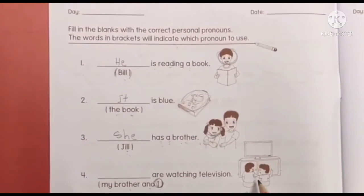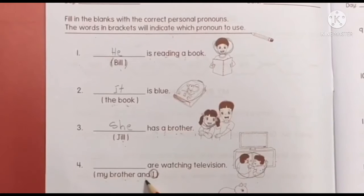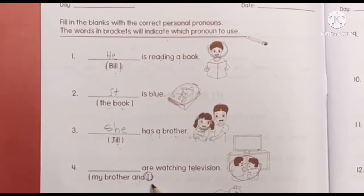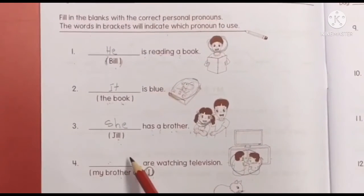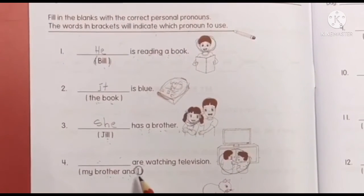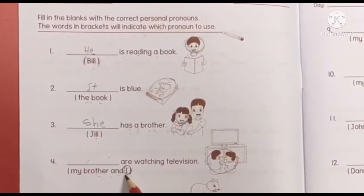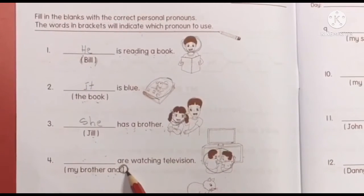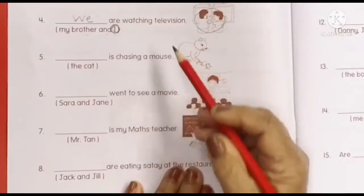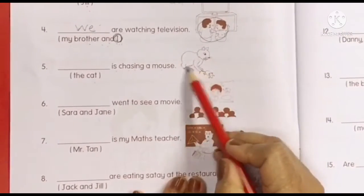The next one — my brother and I. My brother and I are watching television. So, my brother and I — is it 'we' or 'they'? 'We.' And why do we use 'we' and not 'they'? Because of the 'I.' Yes, remember teacher said when it ends with 'I,' we say 'we' and not 'they.'